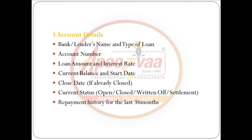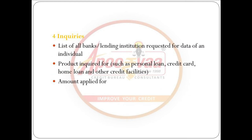3. Account details: bank or lender's name and type of loan, account number, loan amount and interest rate, current balance and start date, close date if already closed, current status — open, closed, written off, or settlement — and repayment history for the last 36 months.